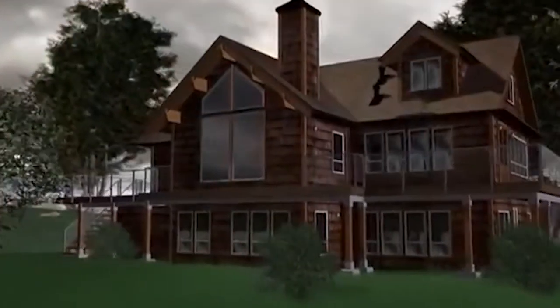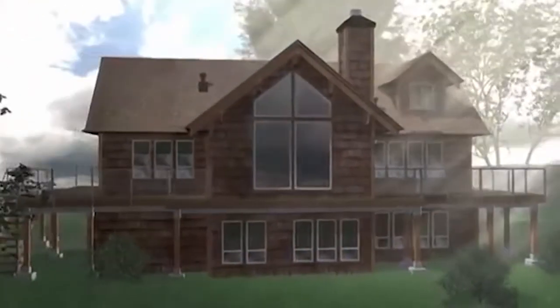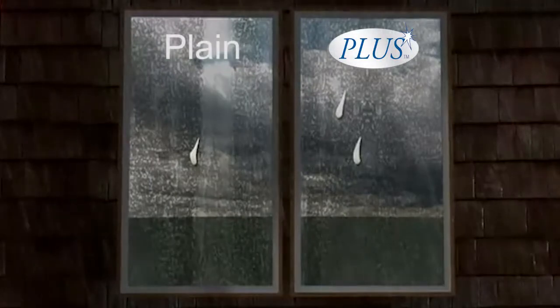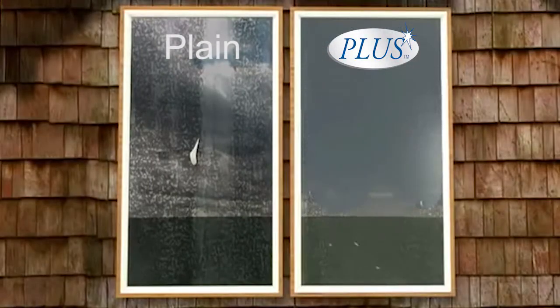Even during overcast weather, the UV rays available continue to activate Plus EasyClean. When organic materials like dust, dirt, and bird droppings build up on the glass, the Plus EasyClean breaks down the materials, allowing it to be easily rinsed off with the rain.